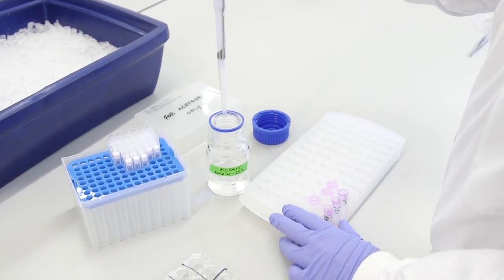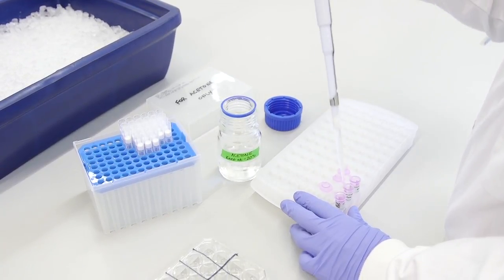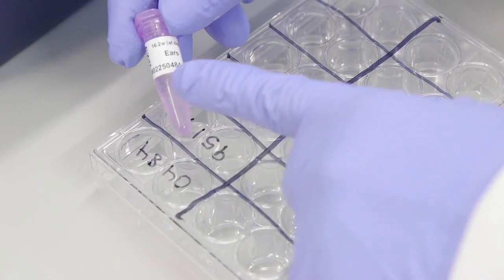Label 1 tube for each sample and place these on ice. Using forceps, transfer a sample's 4 epidermal sheets from the 24-well plate to its corresponding tube.